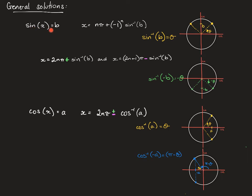Our general solution for sine has two versions: one that has an alternating counter in it — a short version — or a version that has two parts to it. It doesn't matter which one you use, you just need to be aware that there are two varieties used for sine.